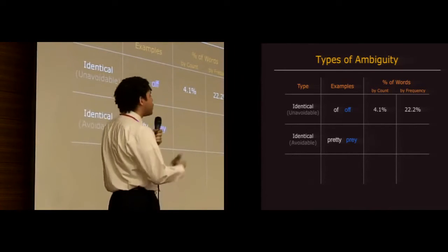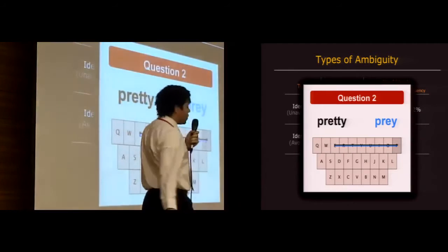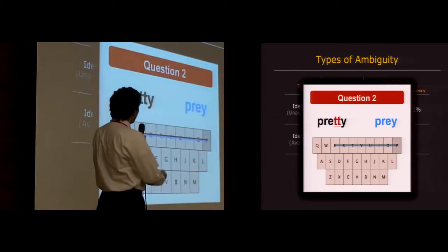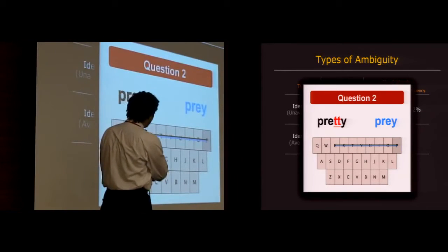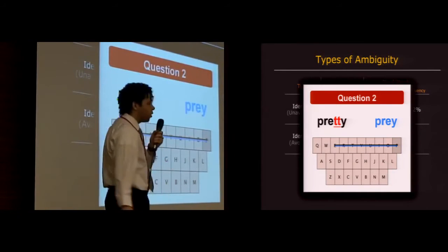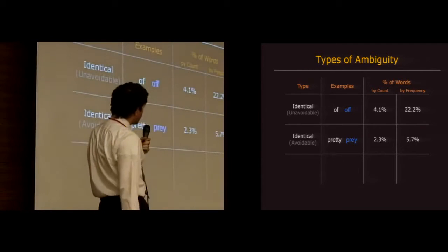Next category are avoidably identical gestures. These are words such as pretty and pray that we saw earlier. They're identical only because those T's that are in pretty happen to be located between the E and the Y on the keyboard. If it wasn't for that, they wouldn't be identical. So here are the statistics for this category.